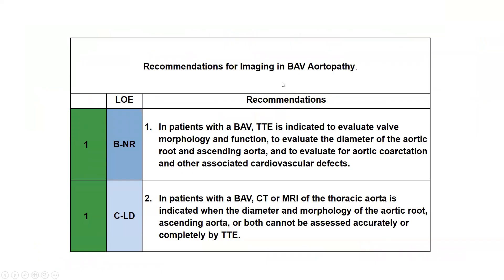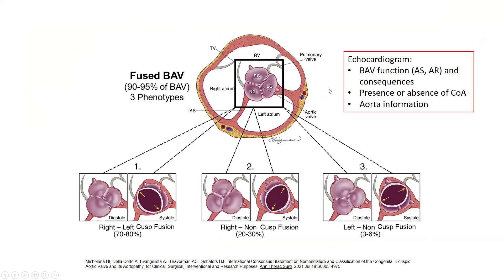Regarding bicuspid aortopathy, it's important to obtain an echocardiogram and imaging of the aorta for individuals with bicuspid valve disease, because of the widespread manifestations of bicuspid valve and aortopathy conditions. The echocardiogram can survey the bicuspid valve for its function — whether aortic stenosis, aortic regurgitation, or coarctation of the aorta are present — and characterize the phenotype of the bicuspid aortic valve and the degrees of valvular dysfunction.